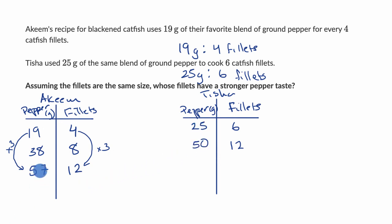So we have set up actually a really nice comparison. If Akeem makes 12 fillets, they're going to use 57 grams of pepper. While if Tisha makes the exact same number of fillets, they're going to use only 50 grams of pepper. So for 12 fillets, Akeem would clearly use more pepper and therefore would have a stronger pepper taste. So Akeem's fillets have the stronger pepper taste.